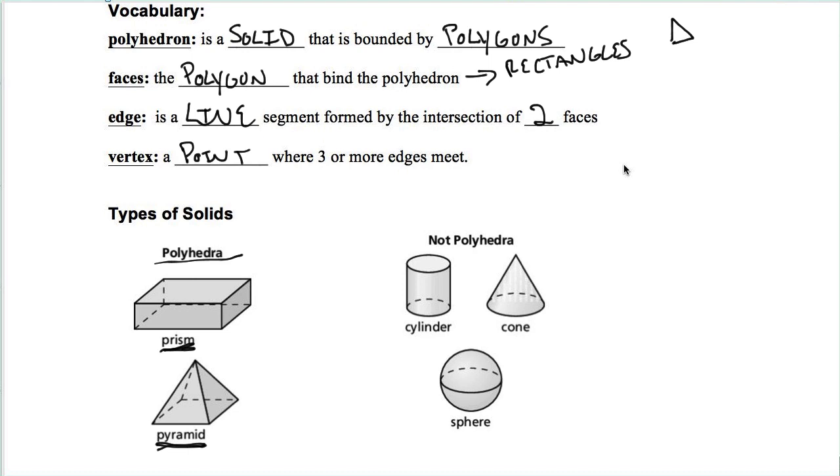Notice the ones that aren't polyhedrons, you have circles in them at some point. A circle is not a polyhedron or it's not a polygon. So you have cylinder, cone, and lastly, a sphere. That is not a polyhedron.